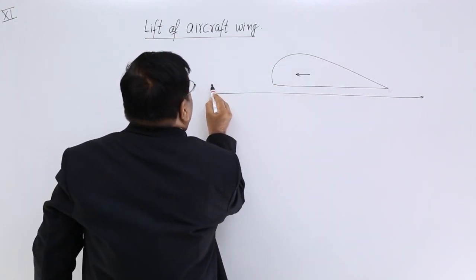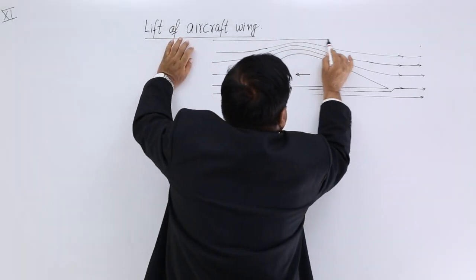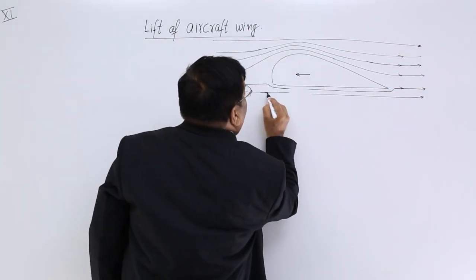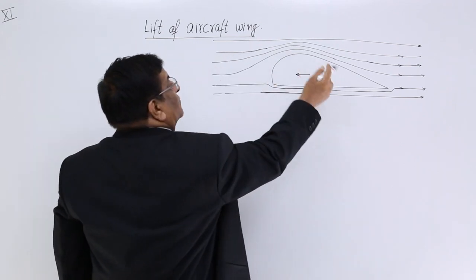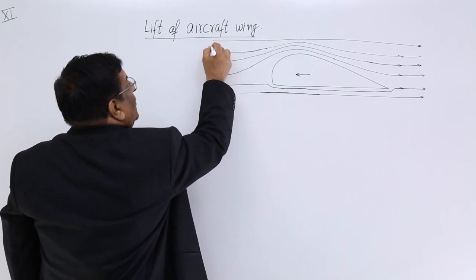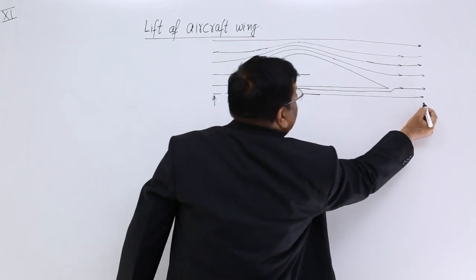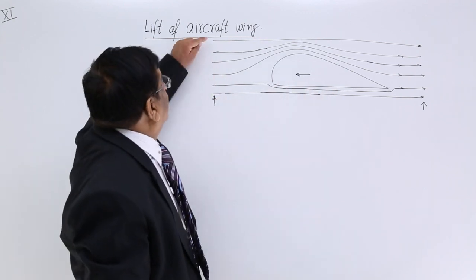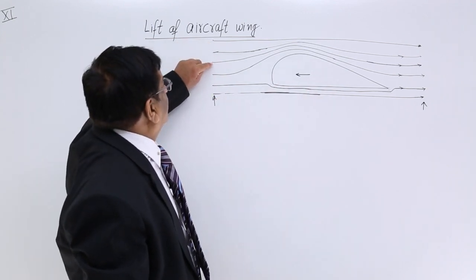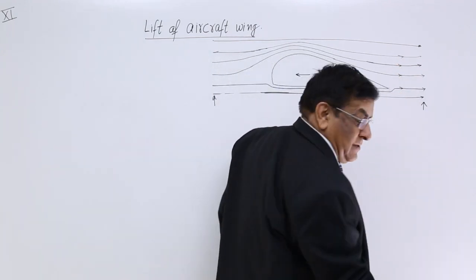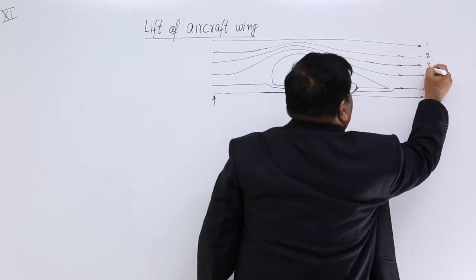So what happens to the streamlines? See this streamline. This is how the air molecules move when this wing is moving in this direction. From this point to this point, observe the distance travelled by the different molecules. At one time, all these particles 1, 2, 3, 4, 5, 6 are here. When it crosses, all these particles are here because this is a streamline flow.